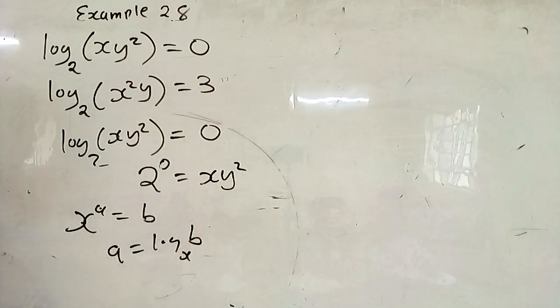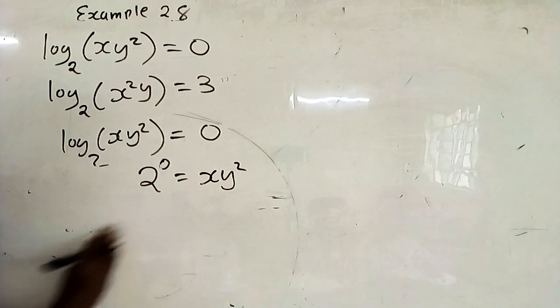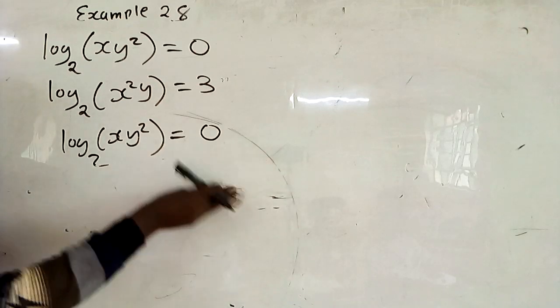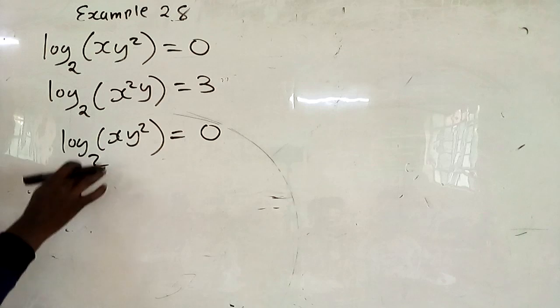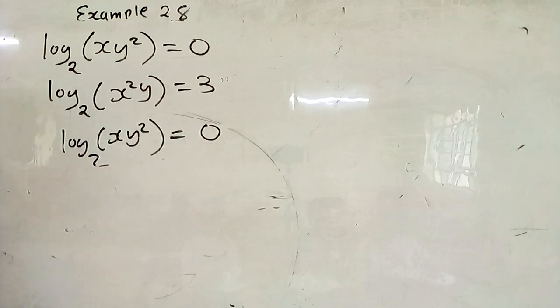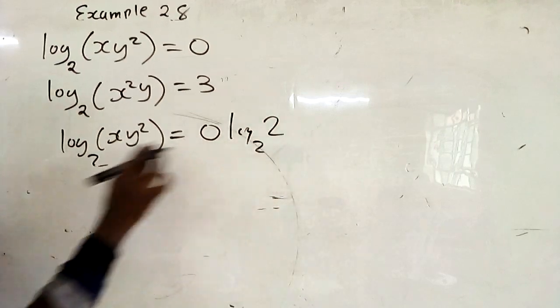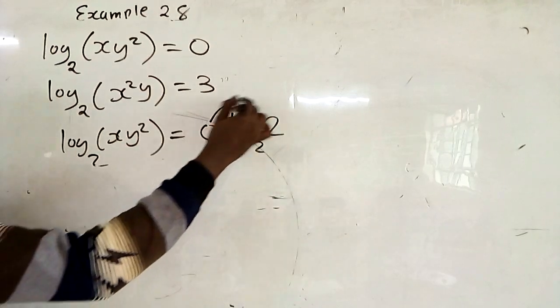The best way to do it is by using the laws of logarithm. If this is base 2, you want to show you have the same base on the other side of the equation. So you introduce log 2 to base 2, so you have the same base.